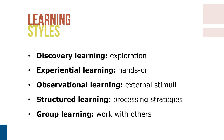Finally, a learning style orientation measure developed to address some of the limitations of Kolb's inventory identified five key factors. Discovery learning is an inclination for exploration during learning. Experiential learning is a desire for hands-on approaches to instruction. Observational learning is a preference for external stimuli, such as demonstrations and diagrams that help to facilitate learning. Structured learning is a preference for processing strategies, such as taking notes and writing down task steps. And group learning is a preference to work with others while learning.